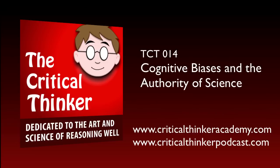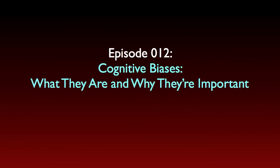This podcast is where I get to explore what it means to be an independent critical thinker, and I talk about the tools and concepts that are important if your goal is to improve your critical thinking skills. In Episode 12, I talked about cognitive biases, what they are and why they're important. In that episode, I gave an example of a cognitive bias known as the anchoring effect, or the anchoring bias, and I showed how this bias might be used by someone like a public relations advisor or a spin doctor to manipulate your beliefs and your behavior.